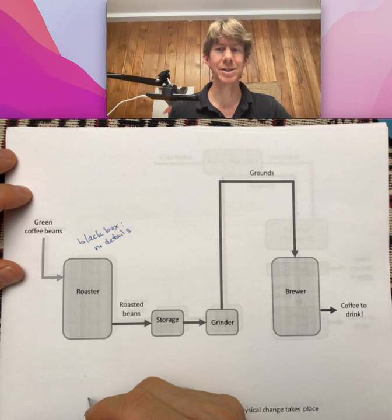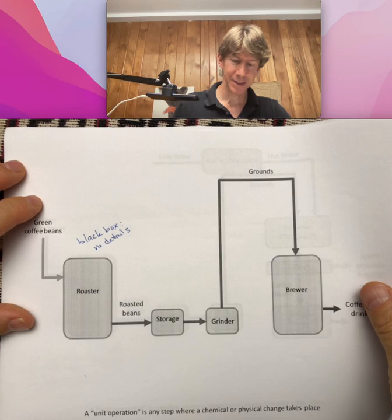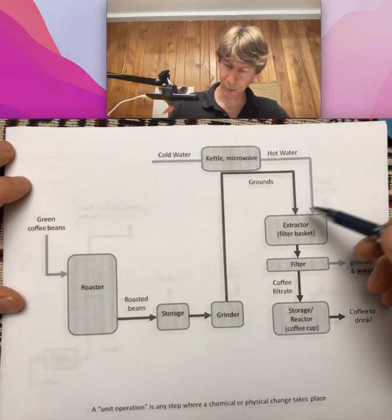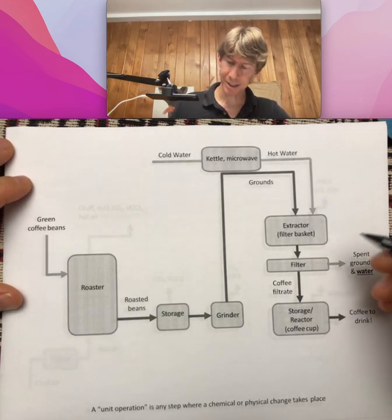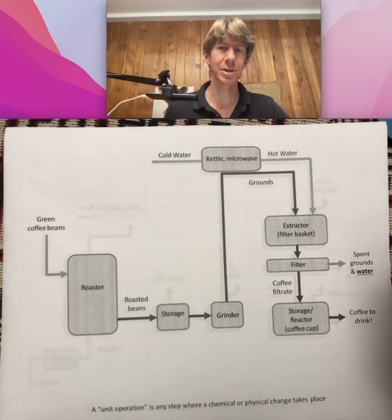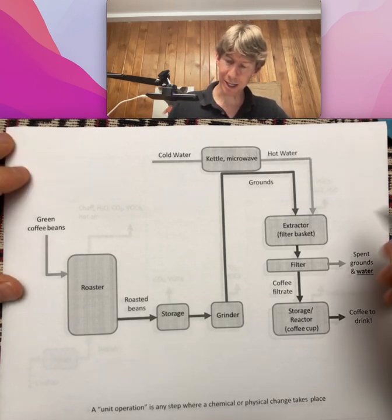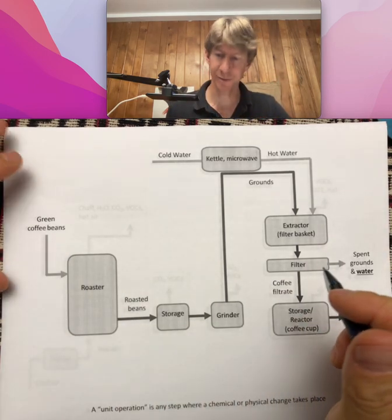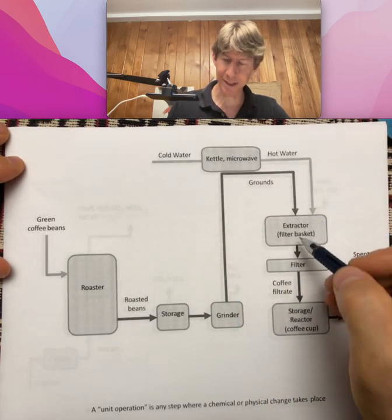You put in grounds to the brewer, and out comes coffee to drink. Sounds simple. But then we build a little more detail into this. For us, the brewer will be almost exclusively a clever dripper, and the clever dripper has what might be called a filter basket — the plastic piece that holds the filter and your coffee. Your grounds spend some time in there.